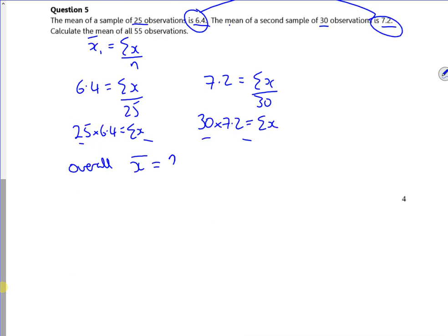So what I need to do is add these together. So 25 times 6.4 tells me exactly the sum of all of them for that first sample, and then the 30 times 7.2 gives me the sum of all of them for the second sample.